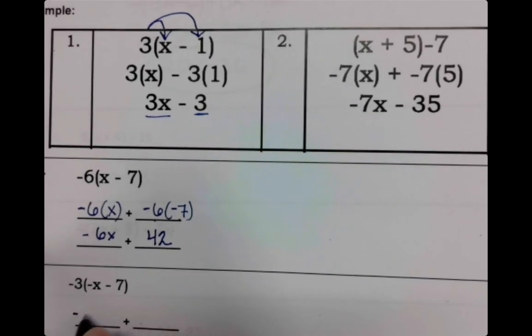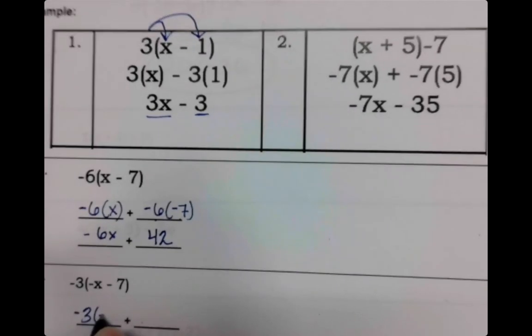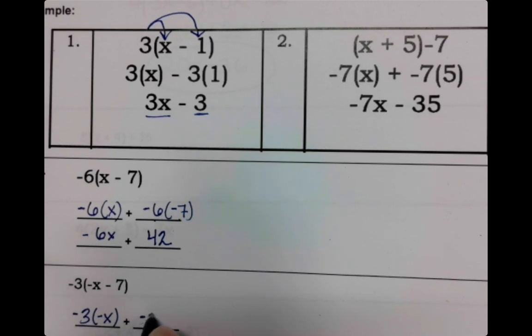Same thing here. We have negative 3 times negative x, negative 3 times negative 7. I'd be positive 3x and positive 21.